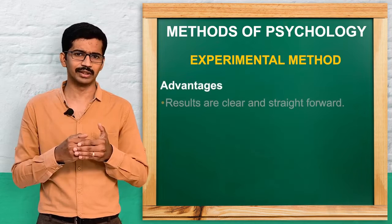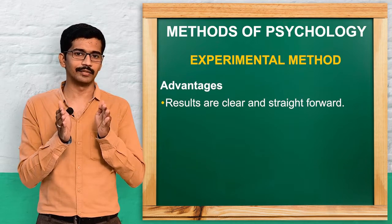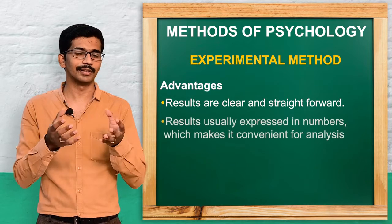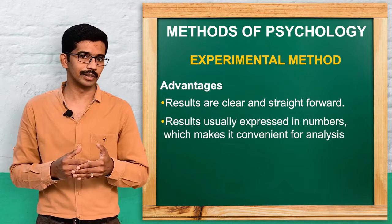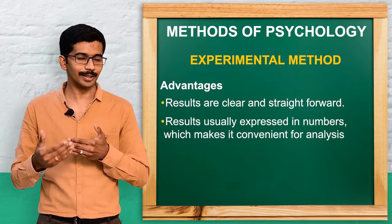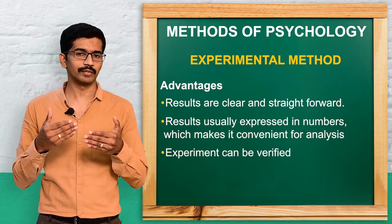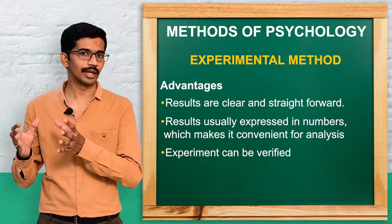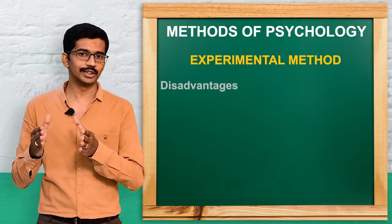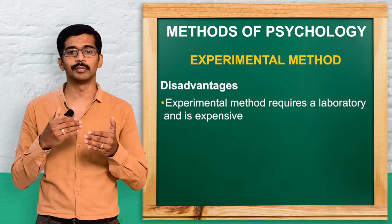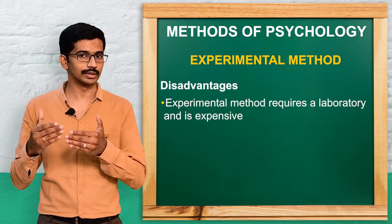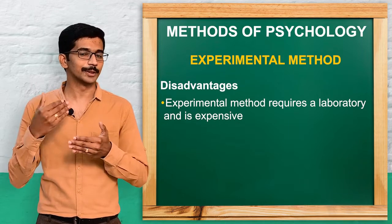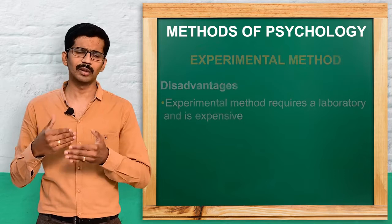The merits of the experimental method are that we can have exact control over the subjects and get direct, exact values. It can be repeated at any time, and numerical data is obtained which is easy to analyze. The disadvantage is that it is an expensive method because it may require a laboratory setting to maintain control over the subjects.